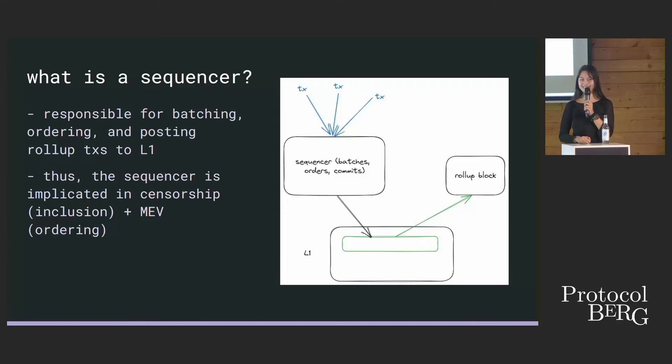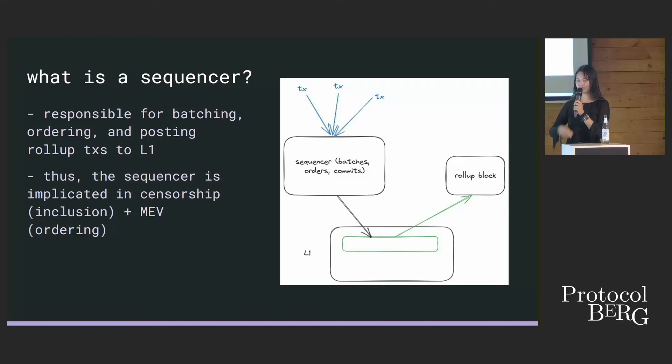So what's a sequencer? The sequencer is essentially responsible for batching, ordering, posting, and committing the transactions in a rollup block to the L1. All the transactions go into the sequencer, it batches and kits them, posts them to L1, and then the rollup nodes execute off of that. As such, the sequencer is implicated in censorship — as it's in charge of what rollup transactions are included — and also MEV, as it's in charge of the ordering of transactions.